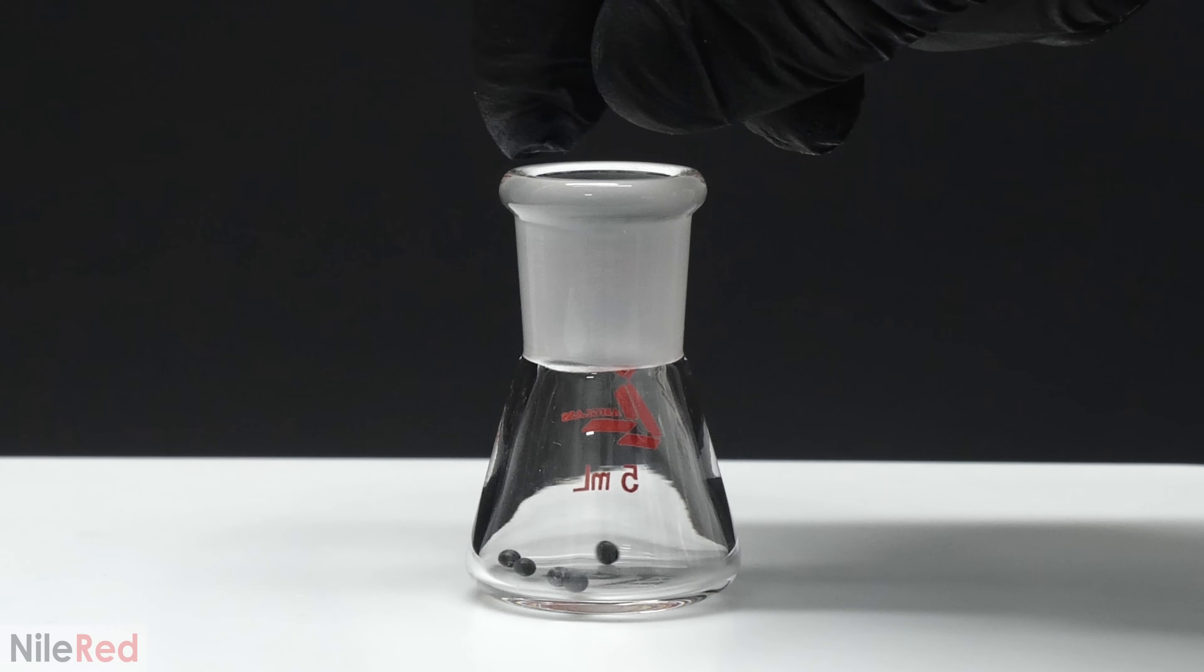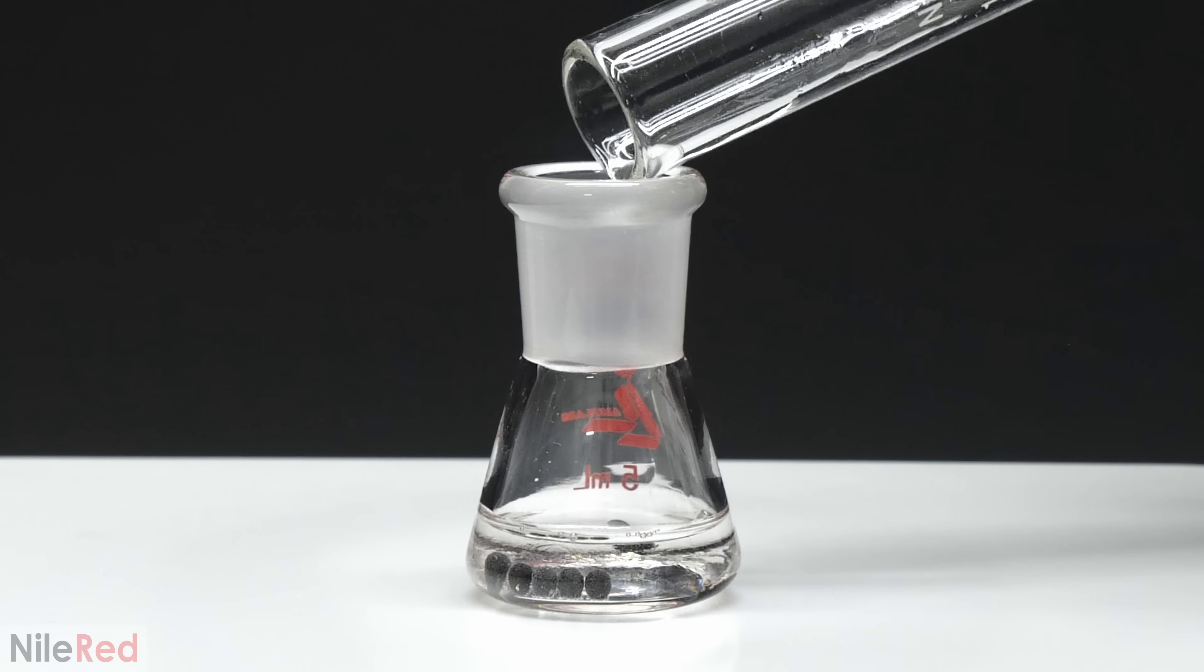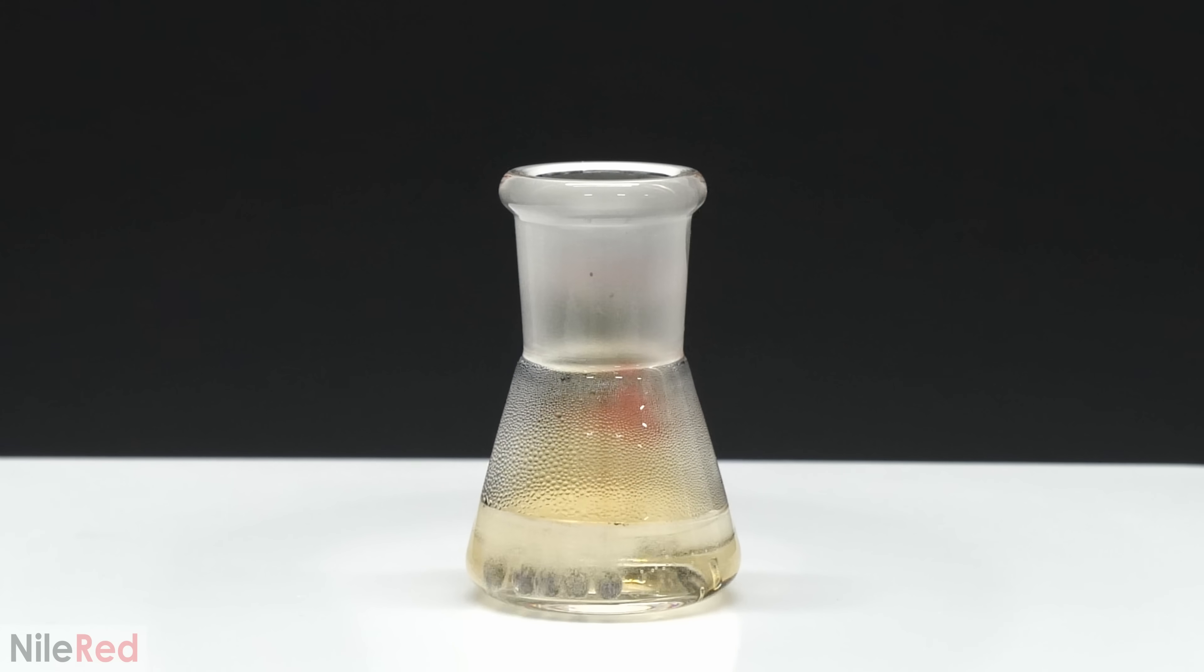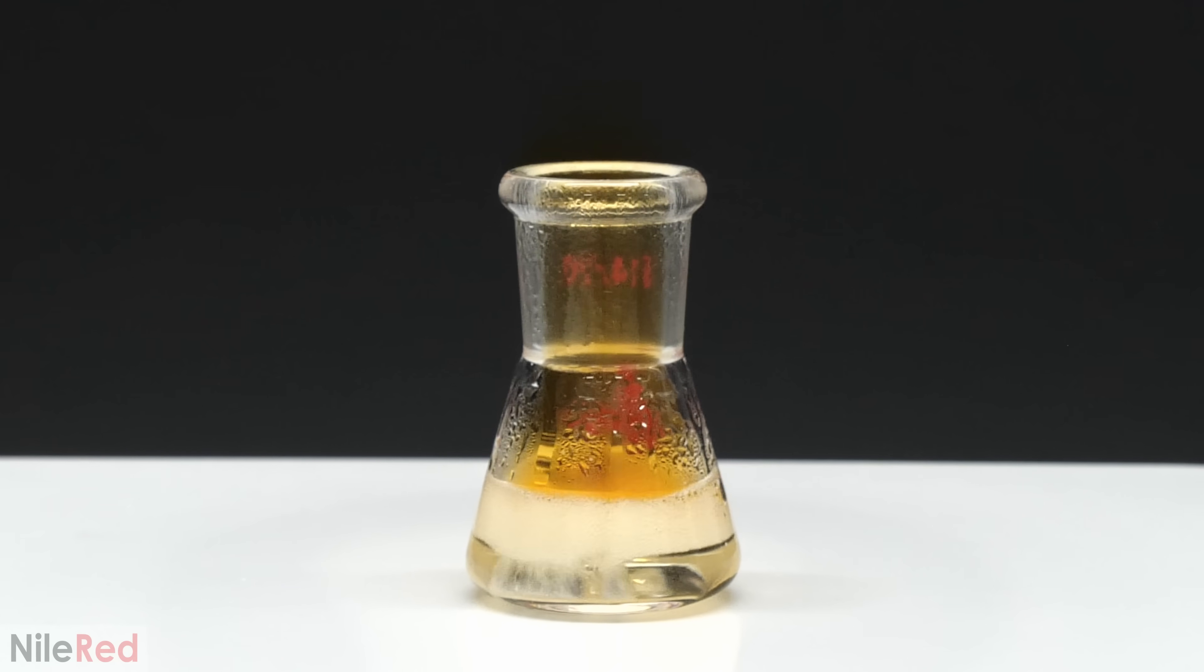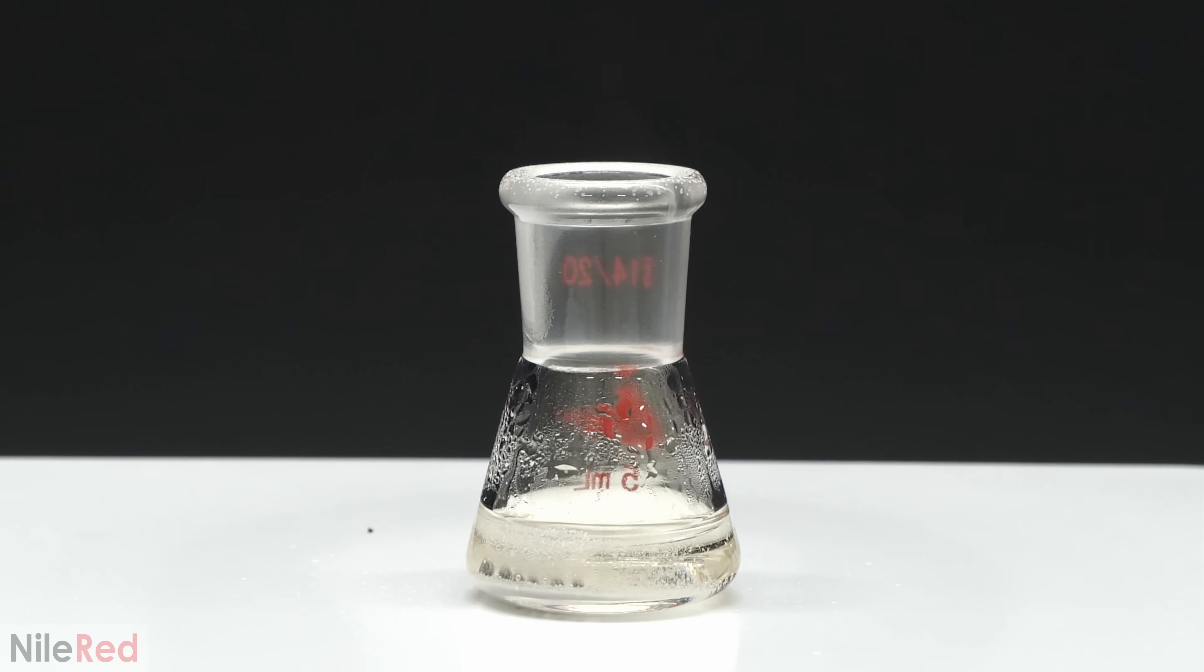The first step is to get a few pieces of lead and to add some dilute nitric acid. The acid almost immediately starts reacting with the lead and dissolving it. It's turning it all into lead nitrate, and it only took a few minutes for most of it to disappear.